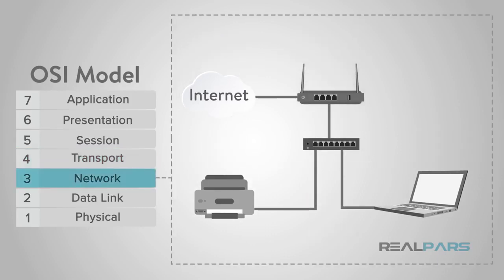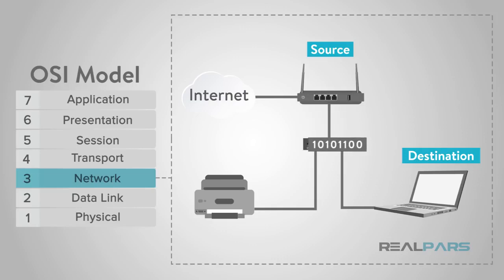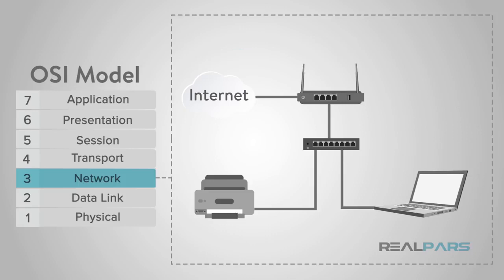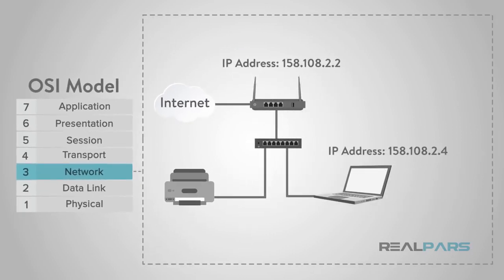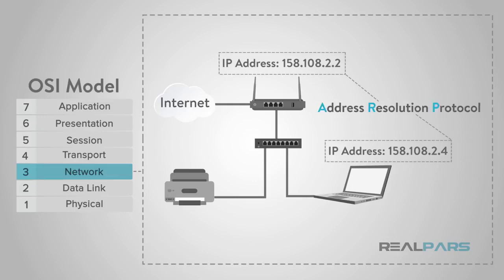The network layer, or layer 3, handles the routing of the data. After the data arrives at this layer, each frame of data is examined to conclude if the data has reached its ultimate target. The layer sends data to the correct destination on outgoing transmissions and receives incoming transmissions as well. The IP portion of TCP/IP is the commonly known network layer for the internet. This layer also manages the mapping between logical addresses and physical addresses. For IP addresses, this is accomplished through Address Resolution Protocol, or ARP.